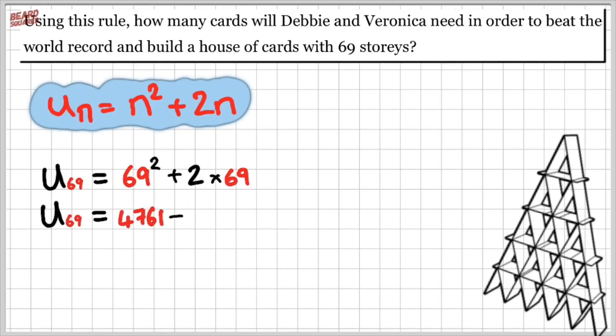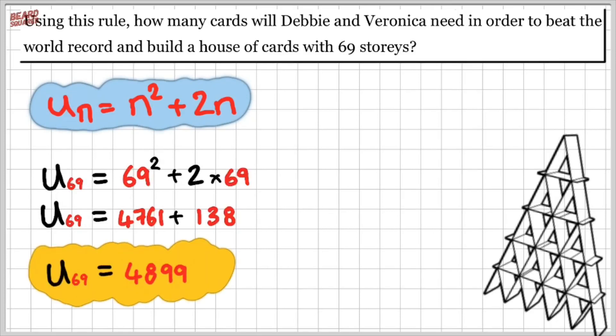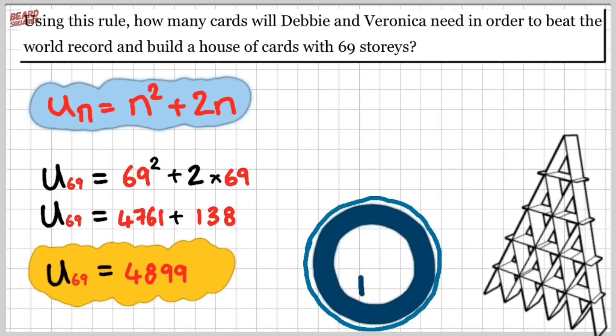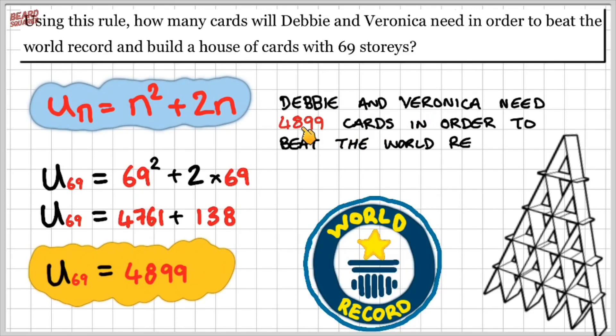So u69 is equal to 69 squared plus 2 times 69. And I can work that out as 69 squared is 4761, plus 2 times 69 is 138. When I add those two values together, I will need 4899 cards to build a house of cards of 69 stories. So Debbie and Veronica need 4899 cards in order to beat the world record.